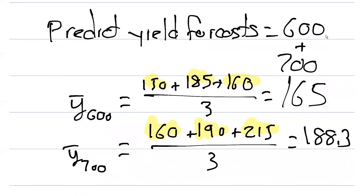So we could say that on average, if a farmer puts in $600 per acre, they could expect a yield of 165 bushels per acre. We can do the same thing for $700. If a farmer puts in $700 per acre, the yield would be on average 188.3 bushels per acre.